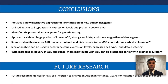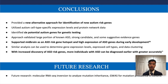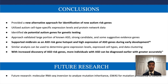My research provided a new alternative approach to identify autism-risk genes and identified six potential autism genes that could be incorporated into genetic testing. My research also supports the midbrain as an autism-risk gene hotspot and the high expression of autism genes during early developmental stages. With increased discovery of autism-risk genes, more individuals with autism can be diagnosed earlier and with greater accuracy. My future research involves using molecular RNA-C conversion probes to analyze mutation inheritance and genome-wide association significance for mutation prevalence in autism cohorts.